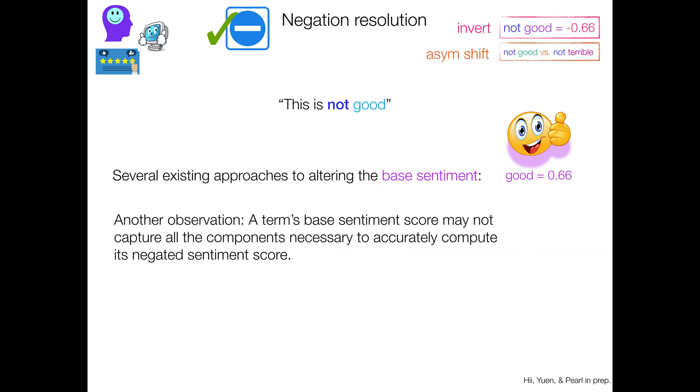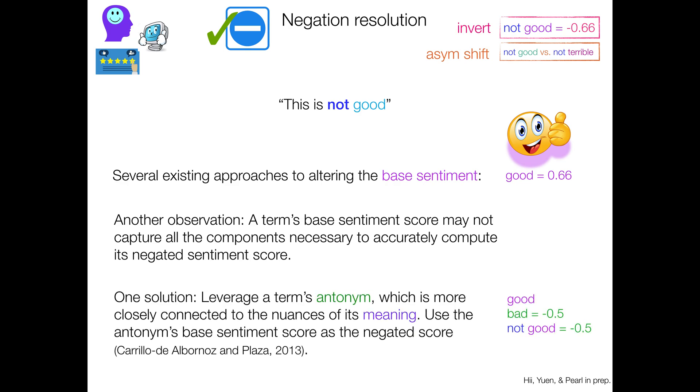Another observation that people made was that a term's base sentiment score may not actually capture all the components necessary to accurately compute its negated sentiment score. So one solution was to say, maybe what we can do is leverage a term's antonym. So bad is the opposite, the antonym of good. And because an antonym is likely to be more closely connected to the nuances of that initial term's meaning, we can therefore use the antonym's base sentiment score as the negated score for the original term. So good's antonym is bad, so we have a base score of negative 0.5, so therefore not good can have a score of negative 0.5, where good had a base sentiment of 0.66.